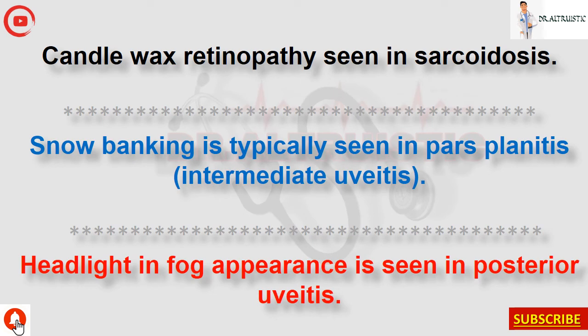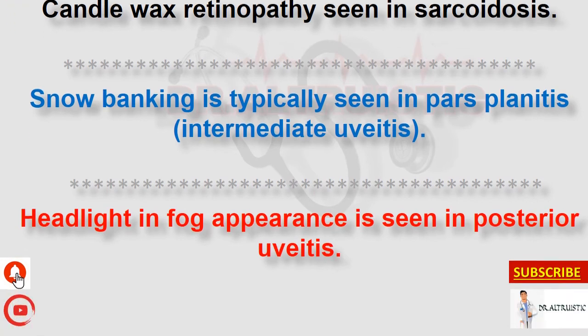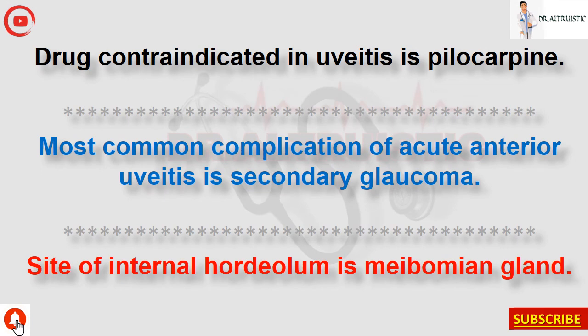Snow banking is typically seen in pars planitis, which is intermediate uveitis. Headlight in fog appearance is seen in posterior uveitis. Drug contraindicated in uveitis is pilocarpine. Most common complication of acute anterior uveitis is secondary glaucoma.